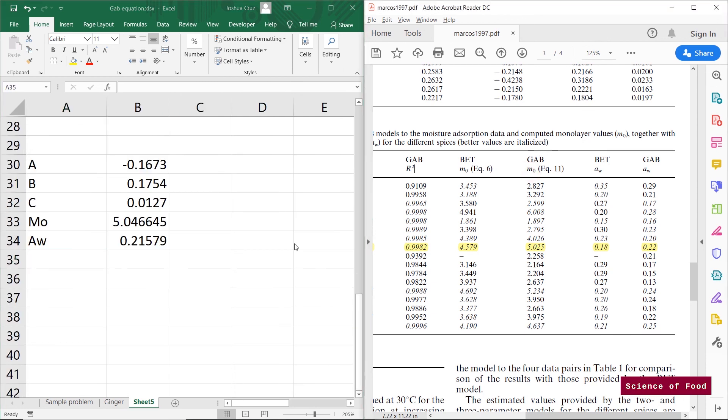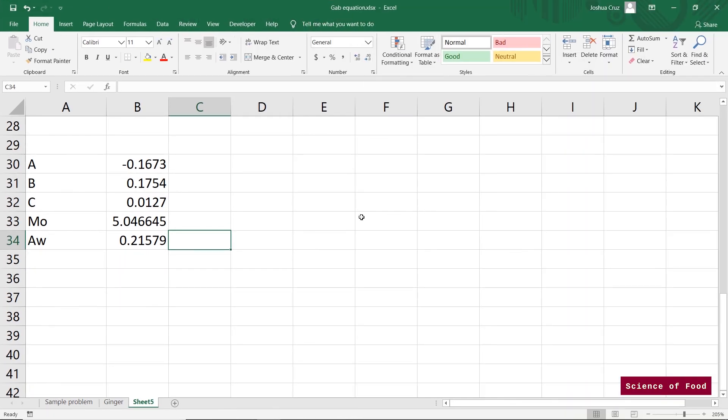For the GAB monolayer value, it's 5.025. It's relatively close. And for the water activity, it's the same if you round it up. So that's how you use the GAB equation.